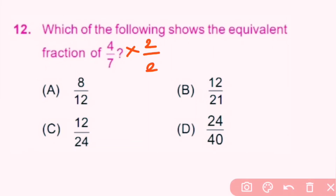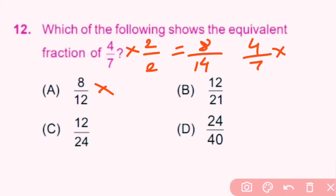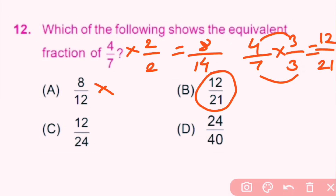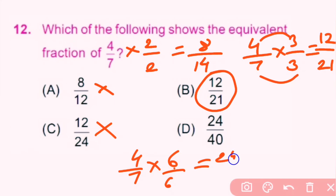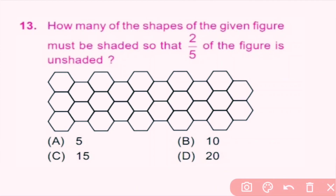Question number 12: Which of the following shows the equivalent fraction of 4 by 7? If we multiply 4 by 7 by 2, the fraction becomes 8 by 14 — but 8 by 12 is not equivalent to 4 by 7. If we multiply by 3: 4 into 3 is 12 and 7 into 3 is 21, so 12 by 21 is equivalent. If we multiply by 6: 4 into 6 is 24 and 7 into 6 is 42, but option D is not equivalent. Only option B (12 by 21) is equivalent to 4 by 7. B is the correct answer.